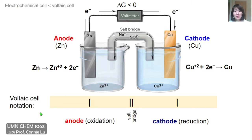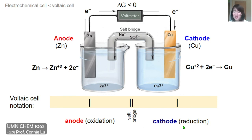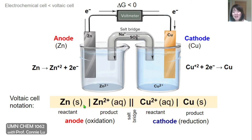This image of the voltaic cell can be represented simply by an expression called voltaic cell notation. Different chemical species are separated by lines, and the double line in the middle represents the salt bridge, which physically separates the two half reactions. Typically, the oxidation reaction at the anode is listed first, and the reduction reaction at the cathode is listed last. In each part, the reactant and product species are separated by a single line, with the reactant appearing first. So in this voltaic cell, we have zinc metal at the anode being converted into zinc plus two product, and on the cathode side, copper plus two reactant is reduced to form copper metal.